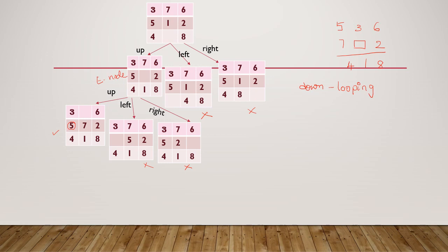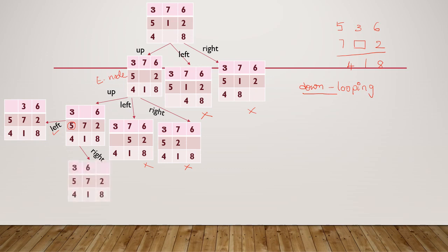Now expanding this node, I cannot move the down tile because it would create a looping state — returning to the previous state. So only two operators remain: moving either the left tile or the right tile into the empty slot. If I move the left tile, this is the resulting state. If I move the right tile, this is the resulting state.